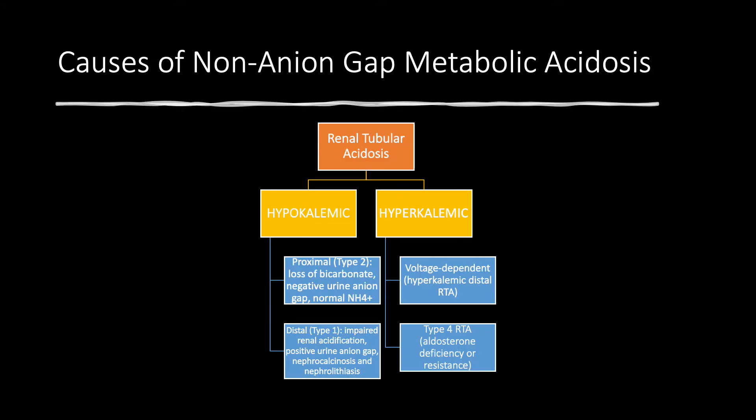Let's talk about renal tubular acidosis. I'm going to approach this complex topic from different angles and repeat the information time and again, so hopefully you'll have a good grasp on this subject. Renal tubular acidosis can be looked at as either hypokalemic or hyperkalemic. If it is hypokalemic, it can be type 2 or type 1. Type 2 is proximal, which is due to loss of bicarbonate. Because of loss of bicarbonate, we have intact distal acidification, meaning urine ammonium is normal, meaning we have a negative urine anion gap — the same you would get with diarrhea — because NH4 ammonium is normal.